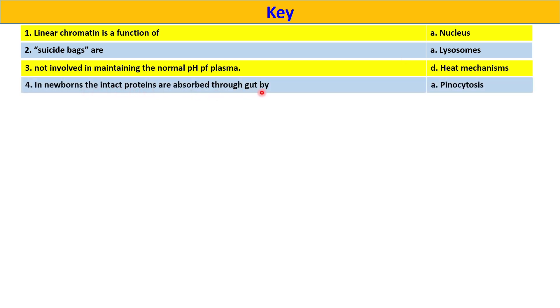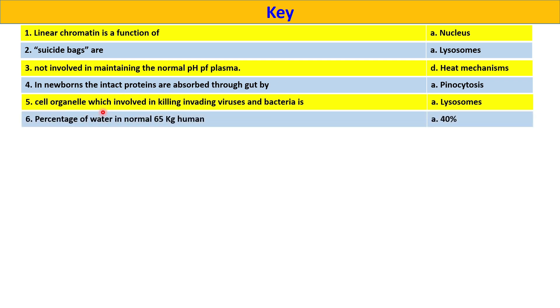In newborns the intact proteins are absorbed through gut by option A, pinocytosis. Cell organelle which involved in killing invading viruses and bacteria is option A, that is lysosomes. Percentage of water in normal 65 kg man is option A, 40 percent. Scleroprotein, option B, keratin. Not involved in renal regulation of pH, lactic acid excretion, option E.